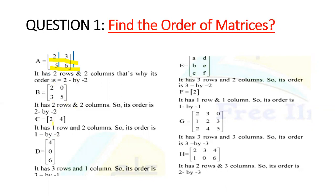Now, in this next case, we have rows 1 and 2 and 3, and column 1. So the order will be 3×1.